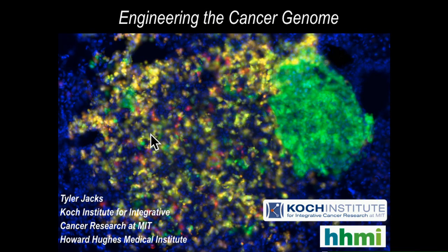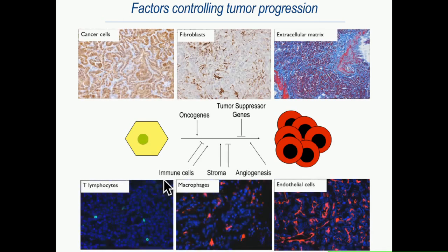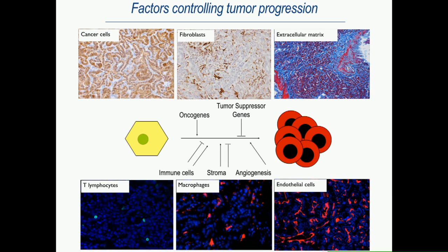Thanks very much for the introduction. I'm going to spend my time talking about some aspects of the work ongoing in my lab, applying various methods to modify genomes of cells to model various aspects of cancer. Cancer cells arise from normal cells through acquisition of mutations in two broad classes of genes: oncogenes and tumor suppressor genes. But cancer is more complex — it involves interactions with many cells of the host: endothelial cells, fibroblasts, cells of the immune system and others, which contribute both positively and negatively to tumor development.